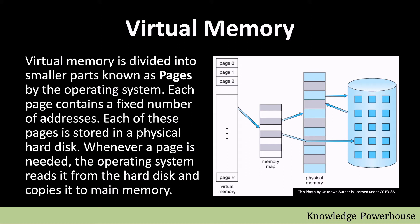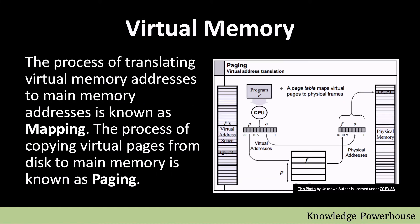Whenever a page is needed, the operating system reads it from the hard disk and stores it in main memory — your RAM. RAM is limited, but virtual memory is larger and can be read from the hard disk into RAM. The process of translating virtual memory addresses to main memory addresses is known as mapping.